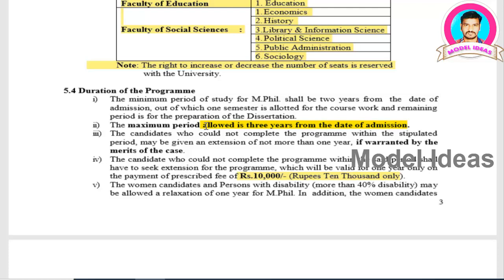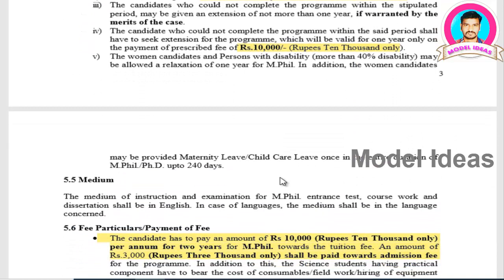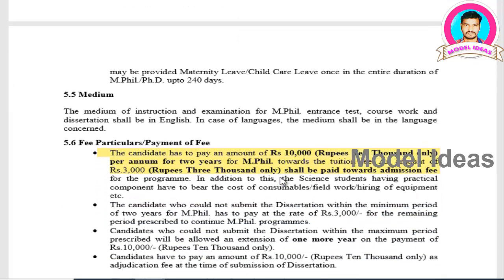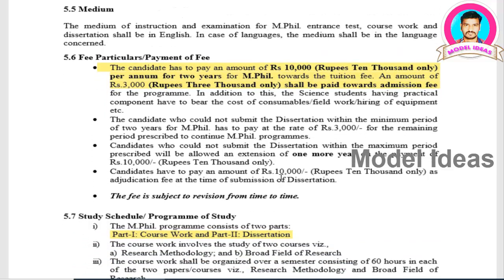The minimum period for MPhil is 2 years, but you can extend it by one more year by paying 10,000 rupees. This extension fee is waived for women who have taken maternity leave or childcare leave. Men must complete within the period or pay 10,000 rupees per year as a penalty. The tuition fee is 10,000 rupees per annum plus 3,000 rupees additional fee.